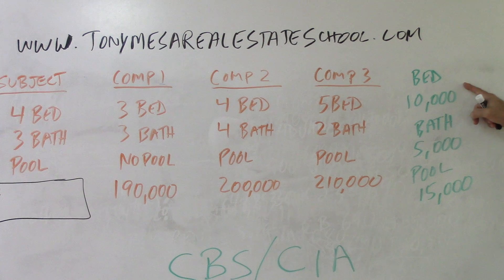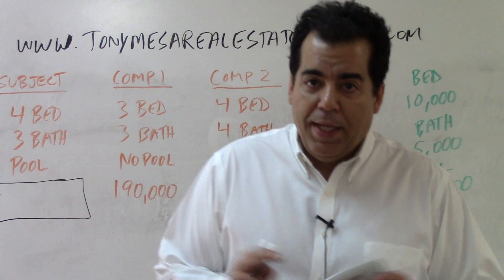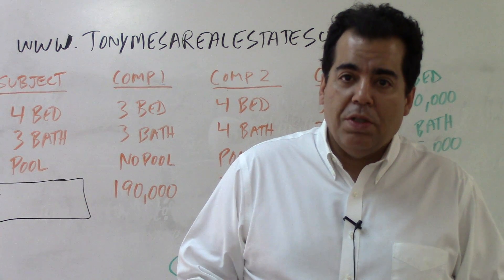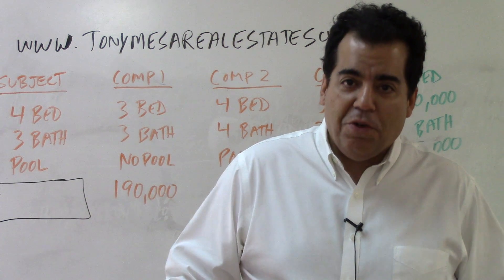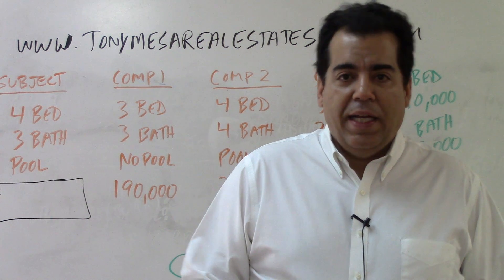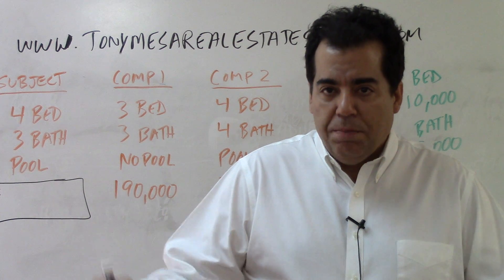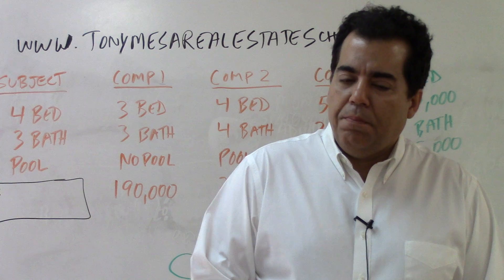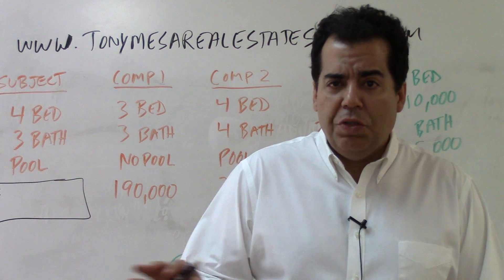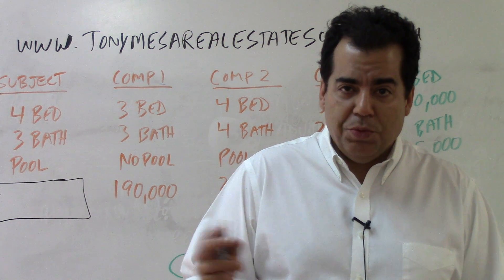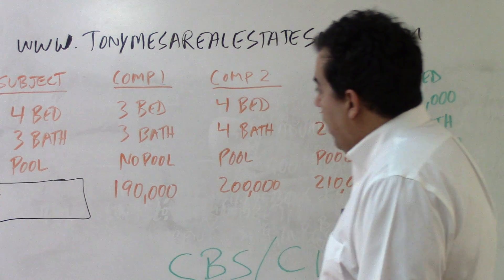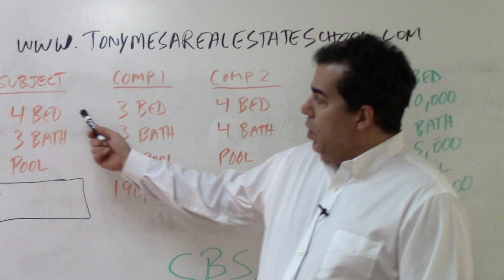In this problem, each bedroom is worth $10,000, each bathroom is worth $5,000, and a pool is worth $15,000. The numbers don't have to make perfect real-world sense — you just use the numbers given, even if they seem a little unusual. Always do the problem based on the numbers given.